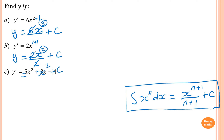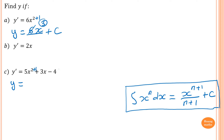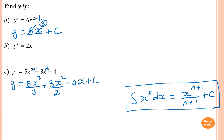Please try this one yourself. For the primitive function of 5x squared plus 3x minus 4: y equals 5x cubed divided by 3, plus — 3x means x to the power 1, add 1 to get power 2, so 3x squared divided by 2, minus 4x, plus a constant C.